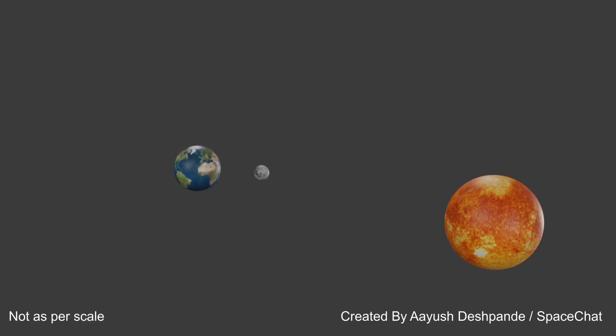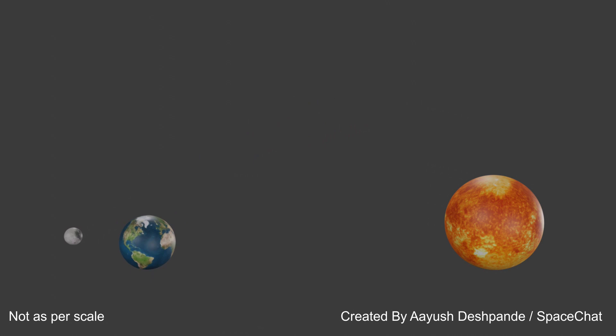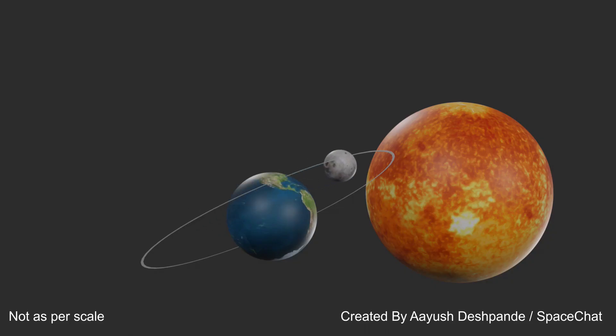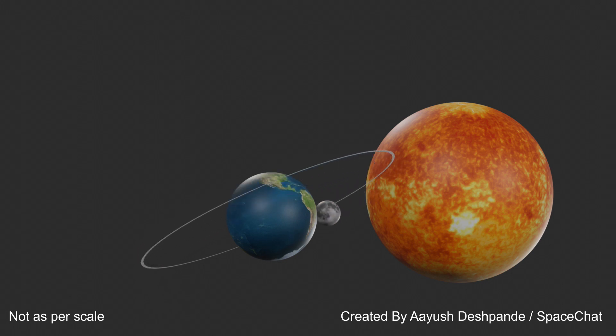Then when do eclipses occur? When the earth is revolving around the sun and it comes at a specific position, the moon is revolving around the earth, and at certain points you can see there is a solar eclipse, and at other points there is a lunar eclipse.